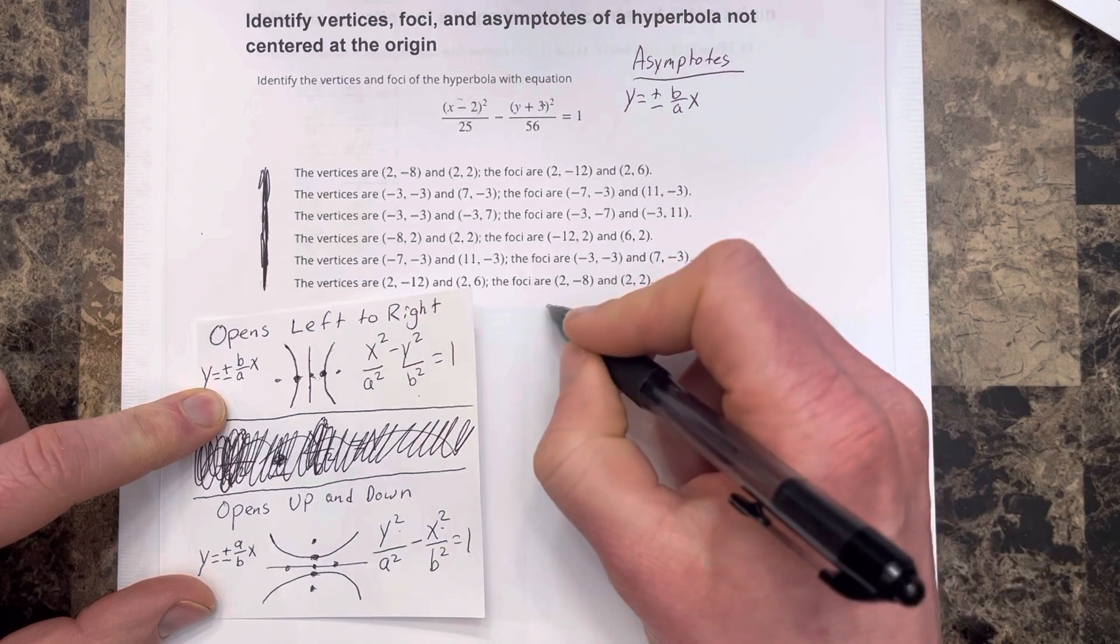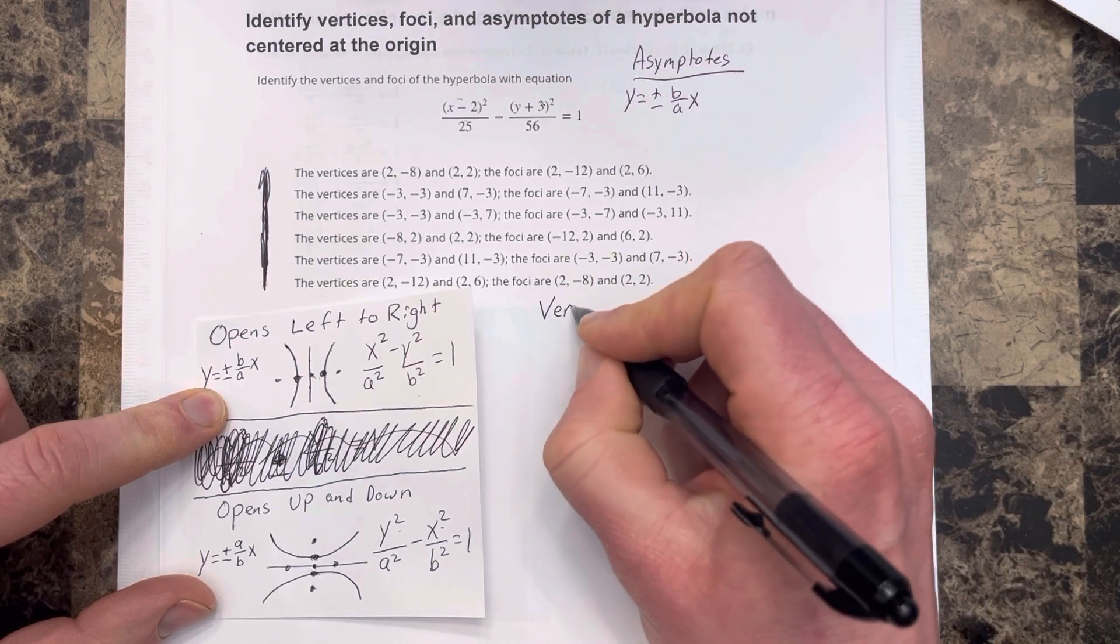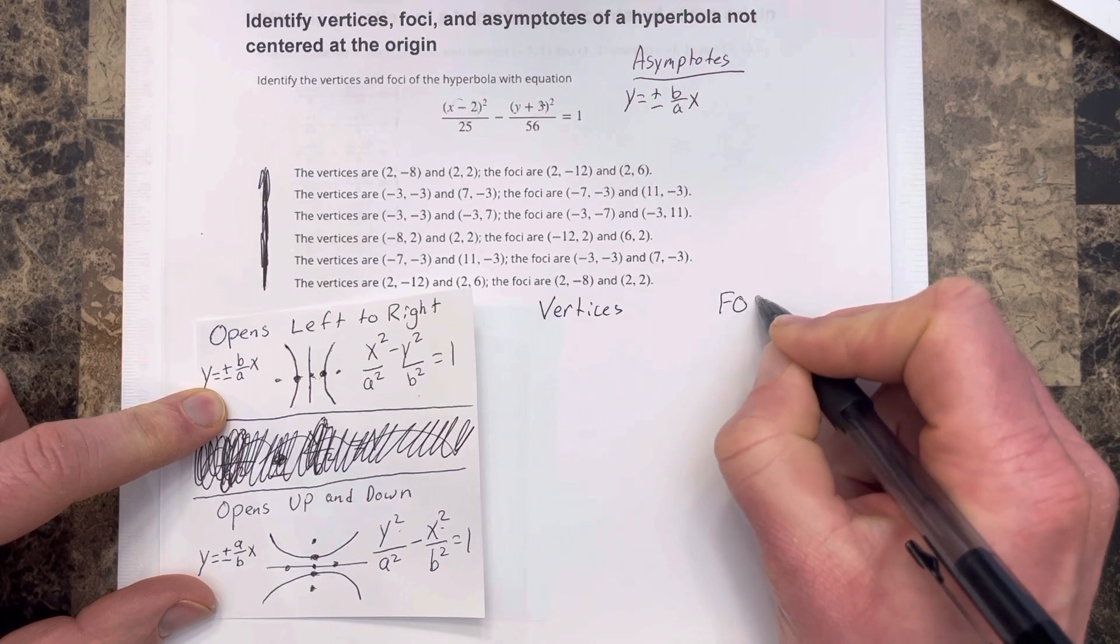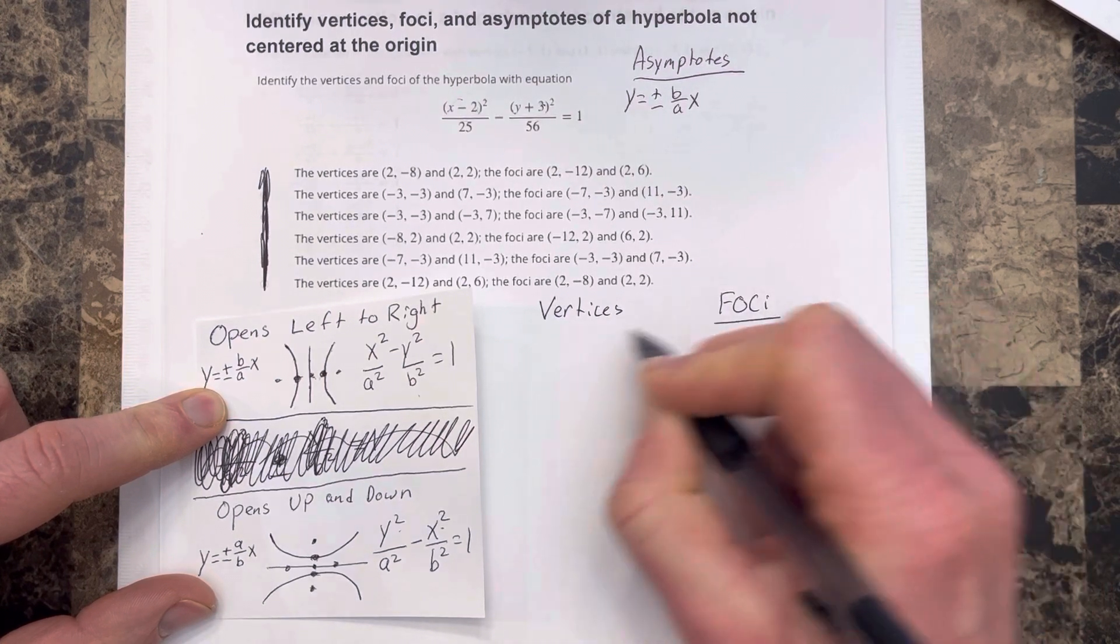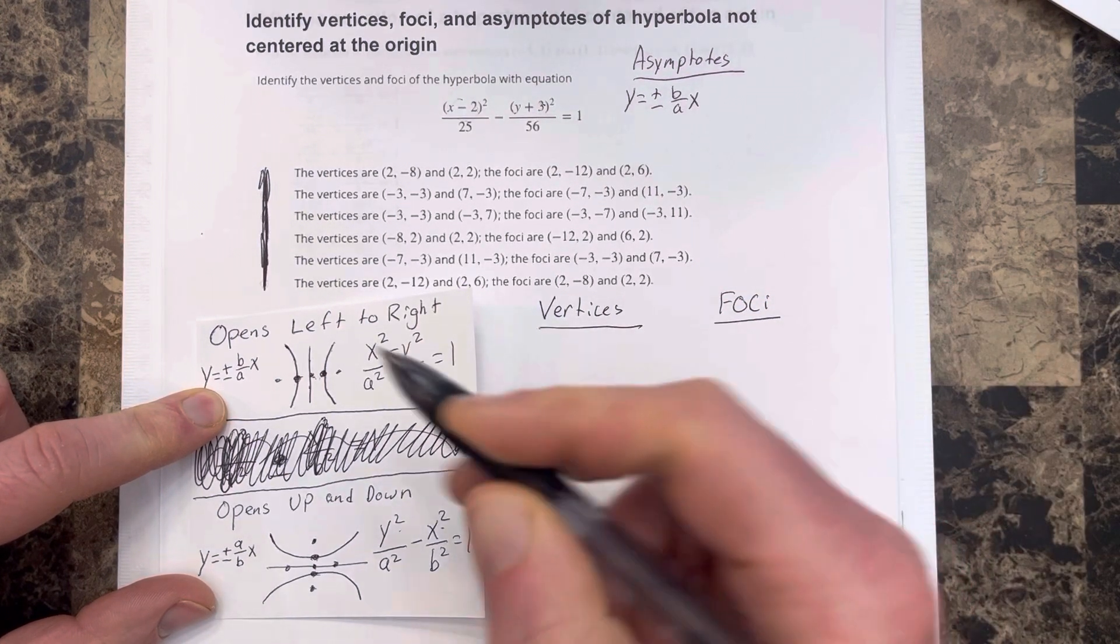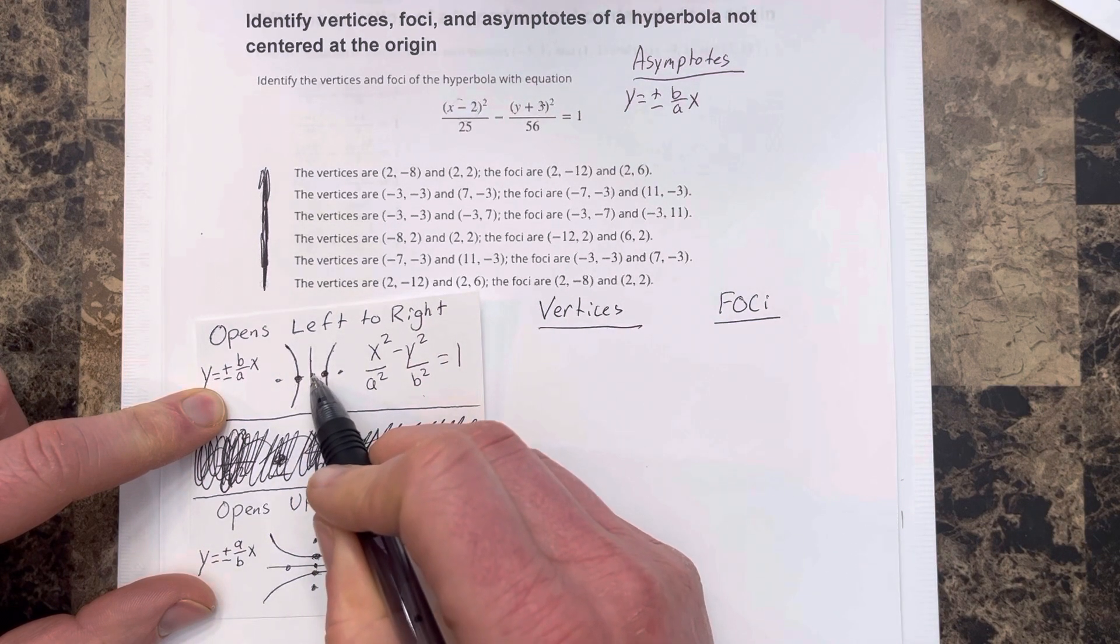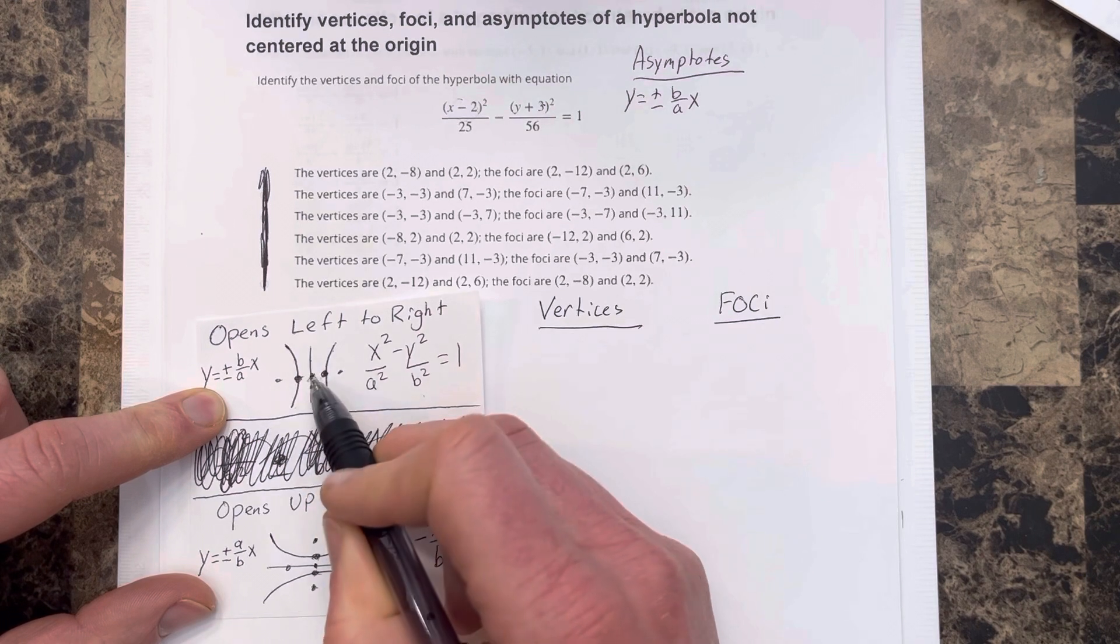To find the vertices, the vertices are located here to the left and to the right of the center, and the distance between the center and the vertices is always a.